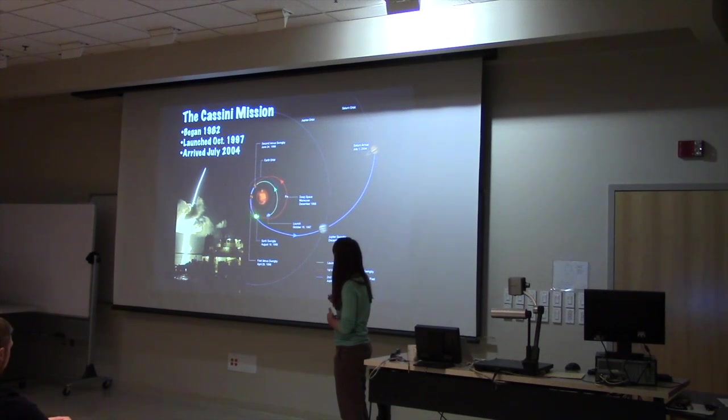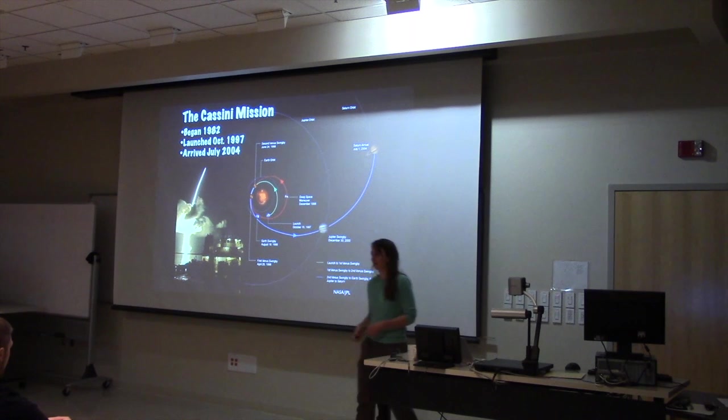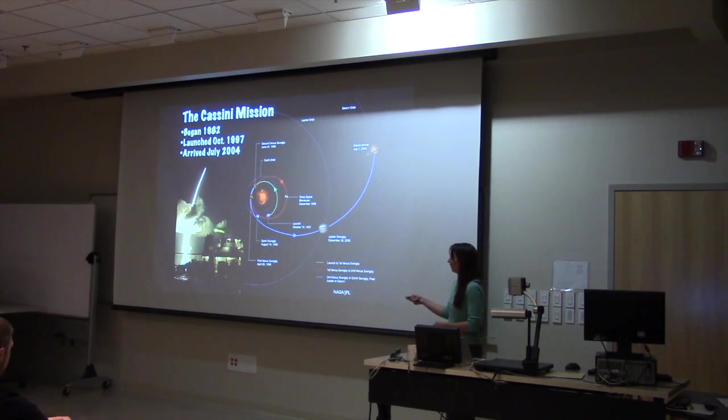So people were worried during the close Earth flyby that maybe something would go wrong and it would come back into the Earth's atmosphere. So people were really worried, protesting this launch, because they thought if this somehow failed, there would be plutonium scattered throughout the Earth's atmosphere, which obviously would be bad for lots of people.